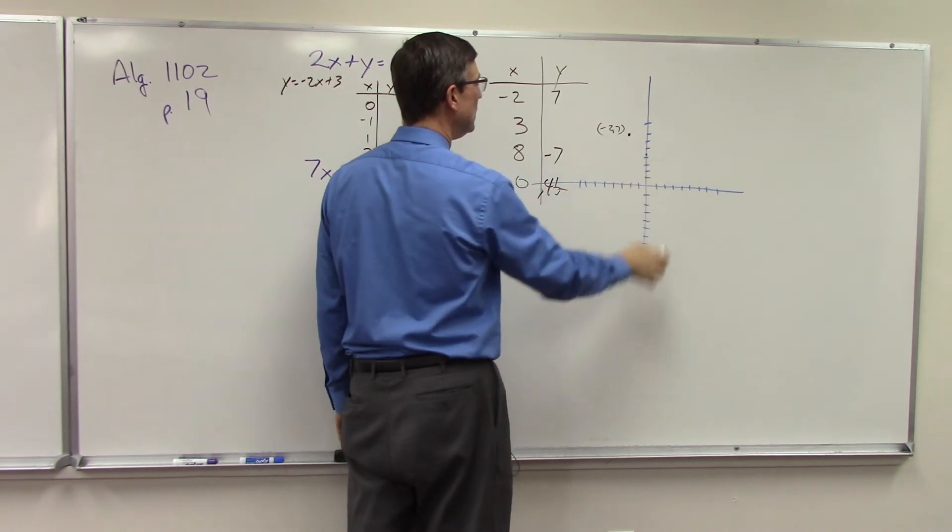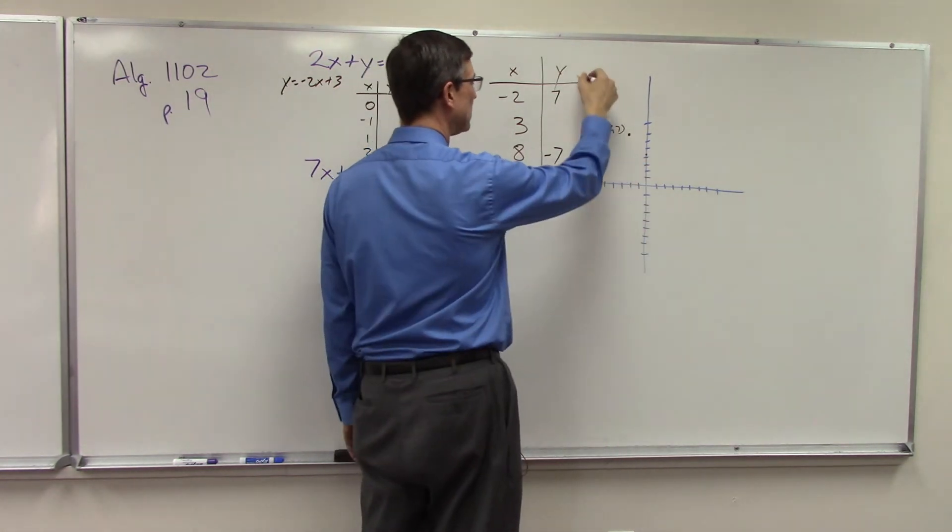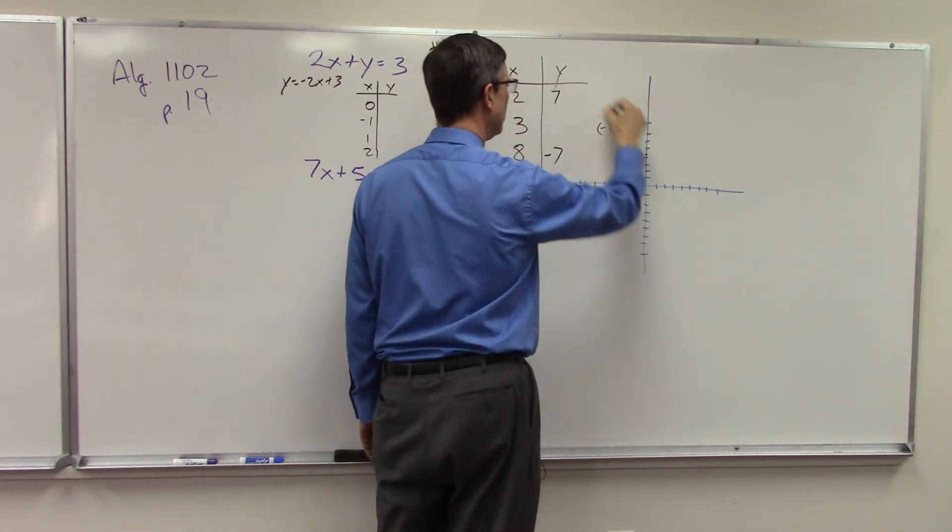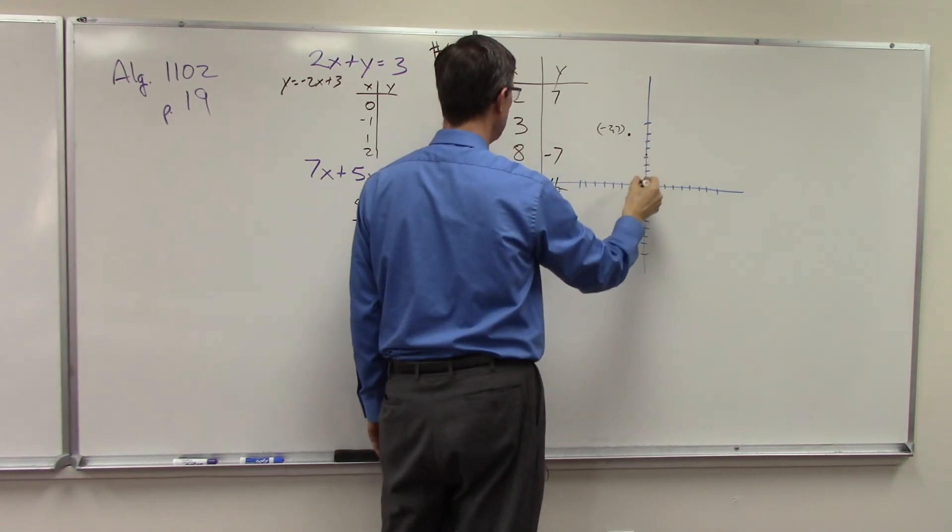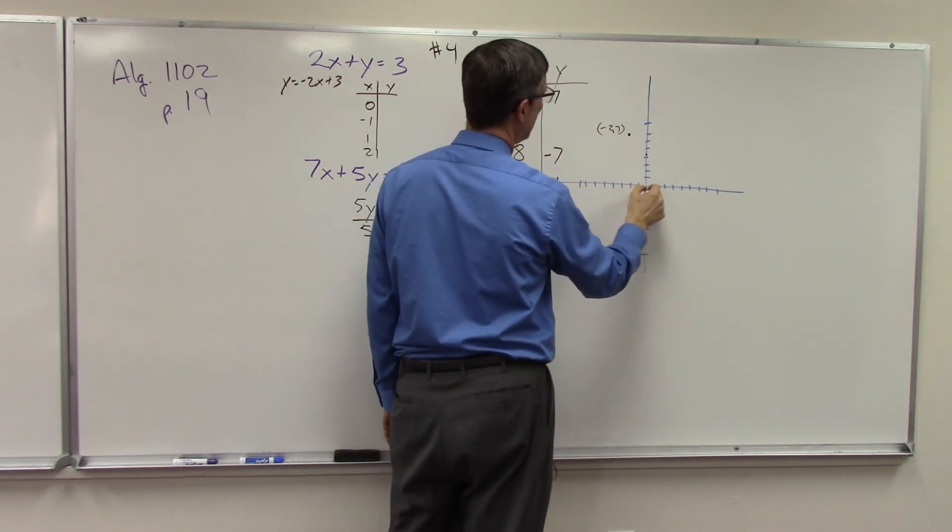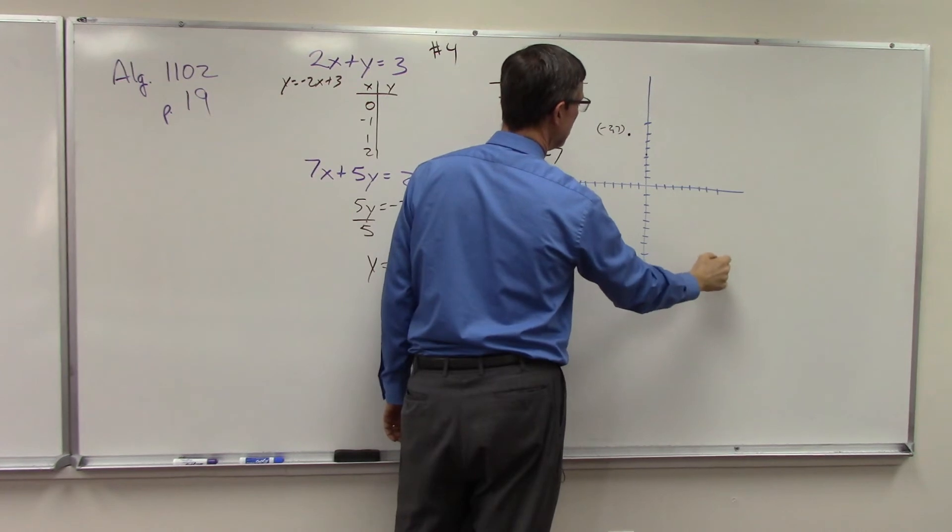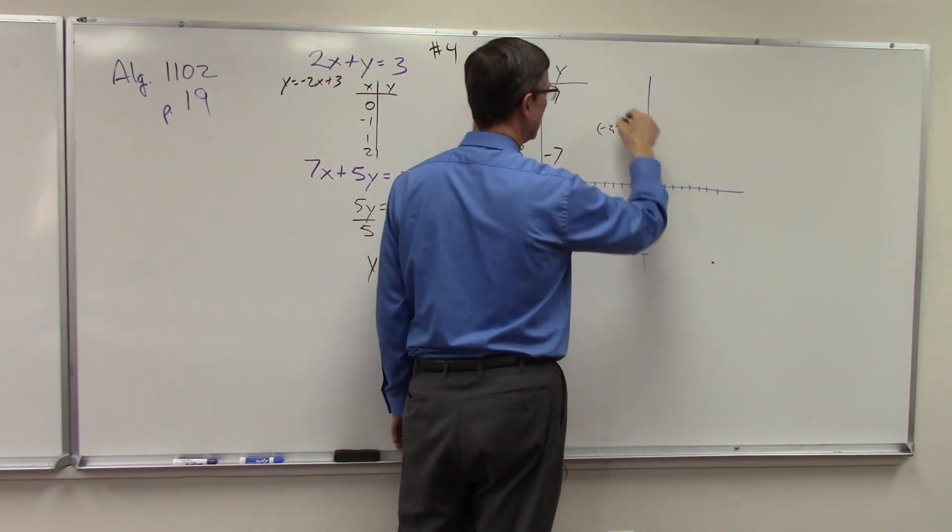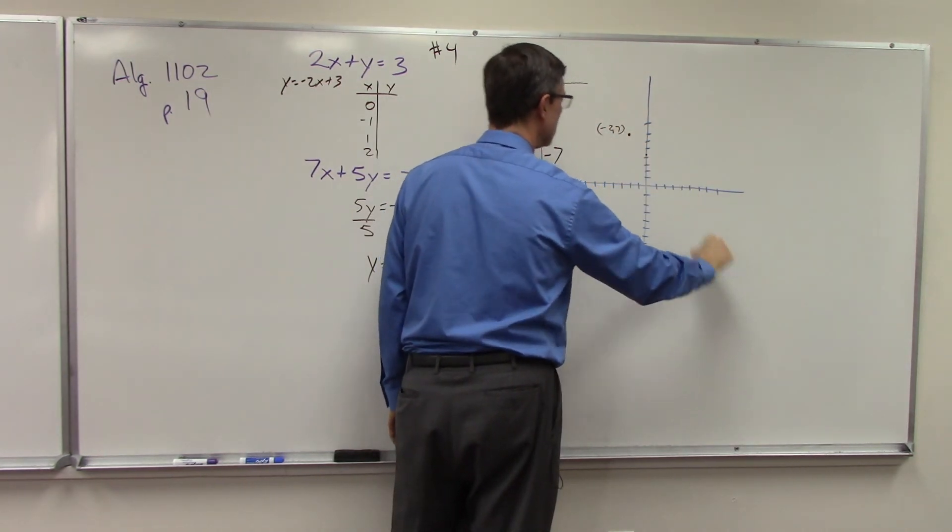So the line that we're graphing is coming down at an angle like this. So it's going to go through this point, over here at 8. It's somewhere down here at negative 7. So we can kind of see it's going through here.